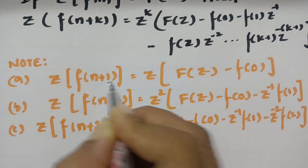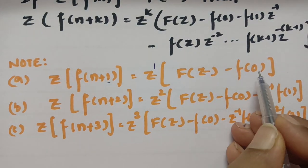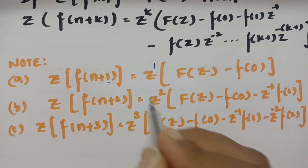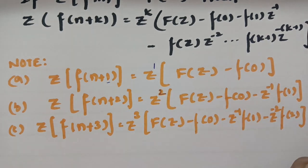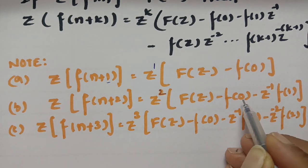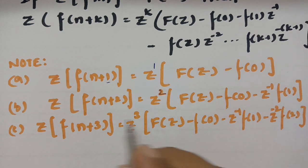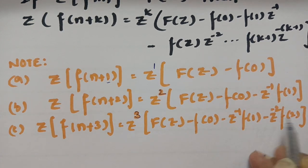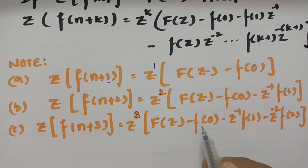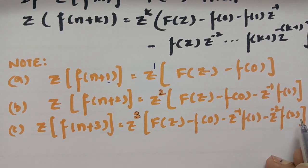If shifted by one unit, the result is z^1 and only the f(0) term remains. If shifted by two units, it is z^2 and you have f(0) minus z^(-1)·f(1). If shifted by three units it is z^3, and there are three terms: f(0), z^(-1)·f(1), and z^(-2)·f(2).